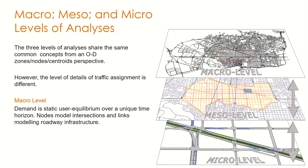In macro models, nodes represent intersections and links represent roadway infrastructure or roadway segments. This is the least detailed level of analysis in terms of operations. However, it provides good value in being able to deduce traffic demand flows from one area to another, or between different zones within the jurisdiction.